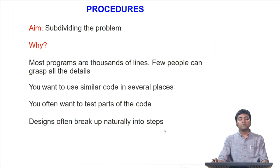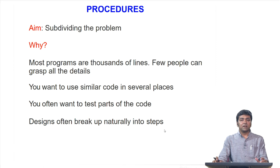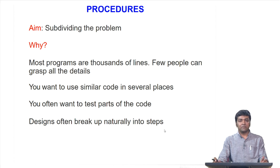What are procedures? The aim of a procedure is to subdivide a given problem. When you write software using Fortran code, the program can consist of several thousands of lines, and often there are certain functions which the program needs to do repeatedly. Instead of writing hundreds of lines for those functions each time, the idea is to write those lines of code once, keep them in a separate place, and call them as and when necessary. This helps in several ways: you can use similar code in several places, test parts of the code more easily, and the design often breaks up naturally into steps.